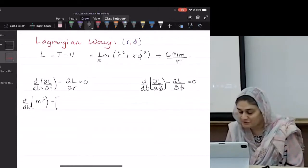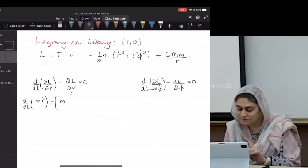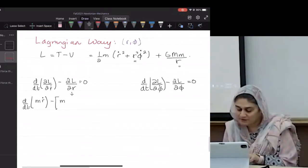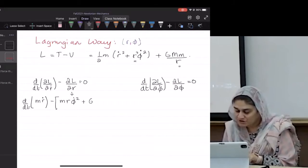Okay, this is where everybody sort of messes up, including me. This is going to have two values, right? This is going to have one of this r and one of this r. So it'll be m·r·φ̇² plus GMm·d/dr(1/r) equals zero.